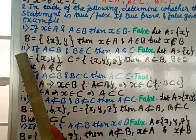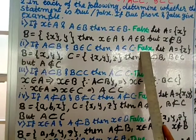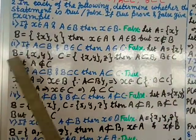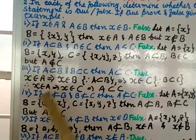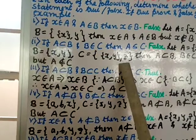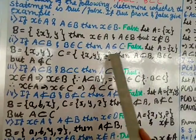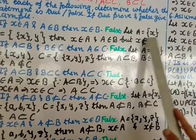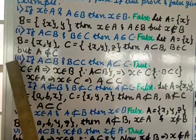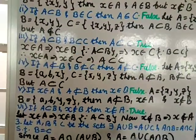Statement 2: if A ⊆ B and B ∈ C then A ∈ C. This is also false. Let A = {x}, B = {x, y}, so A ⊆ B. Take C = {{x, y}, z}, so B ∈ C. But A = {x} is not an element of C, so A ∉ C. Statement 3: if A ⊆ B and B ⊆ C then A ⊆ C. This is true.